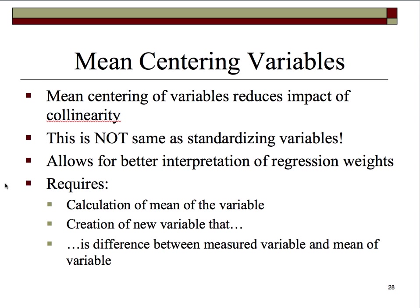Standardization of variables requires that each observation's score is subtracted from the mean of that variable and divided by the standard deviation. We don't do that with centering — we simply subtract the mean of the variable from each score. This will allow us to have a much better interpretation of our regression weights.